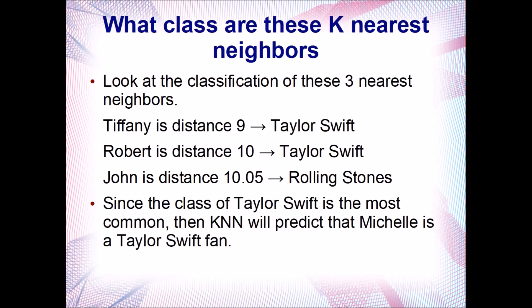Now we look at the classifications of these three nearest neighbors. Tiffany is a Taylor Swift fan, Robert is a Taylor Swift fan, and John is a Rolling Stones fan. Since Taylor Swift is the most common classification among these nearest neighbors, the KNN algorithm predicts that Michelle is or will be a Taylor Swift fan. So we would potentially show her ads to purchase or listen to Taylor Swift music. That's how the K-nearest-neighbor algorithm works to classify data based upon reference data that already knows what group each record belongs to.